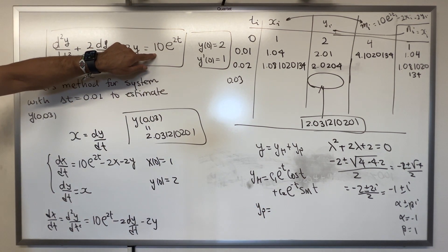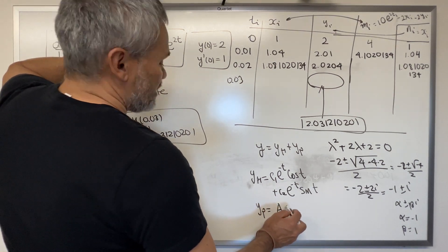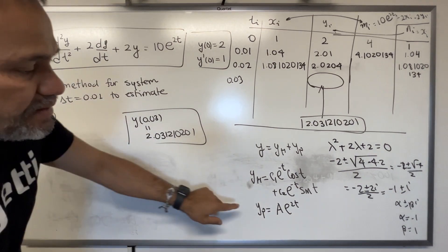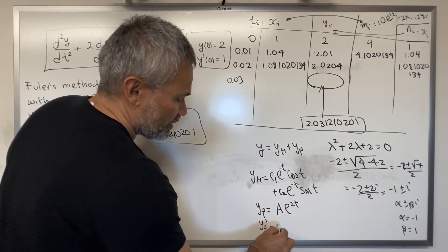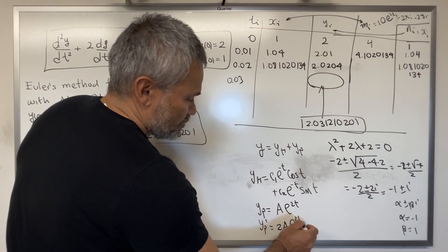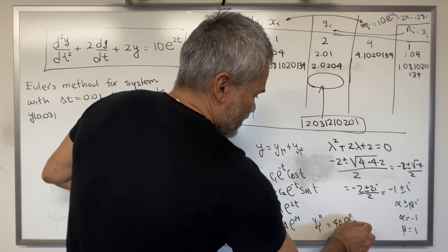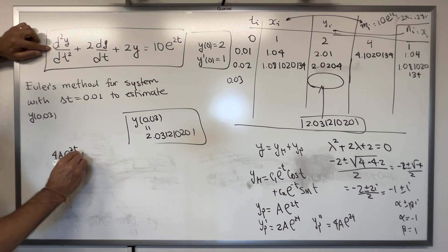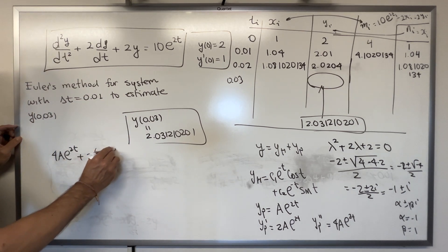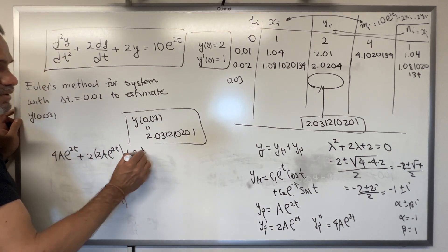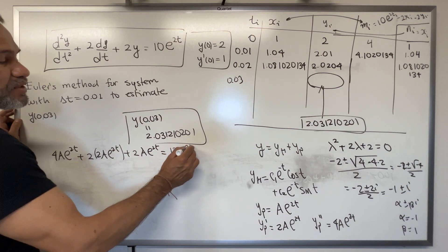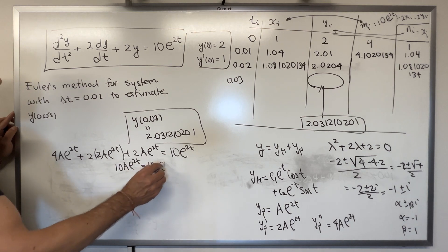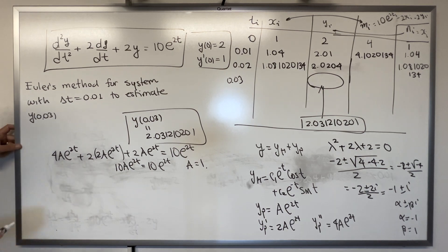For the particular solution, we look at the non-homogeneous part 10e^(2t) and guess yₚ = Ae^(2t). The first derivative is 2Ae^(2t) and the second is 4Ae^(2t). Substituting into the equation gives 4Ae^(2t) + 2(2Ae^(2t)) + 2(Ae^(2t)) = 10e^(2t), so 10A = 10, meaning A = 1.